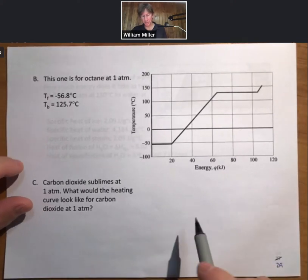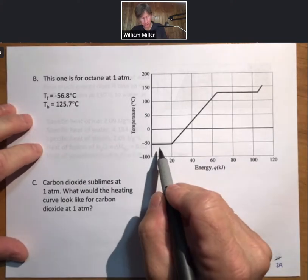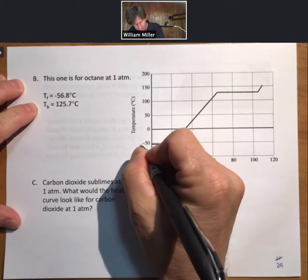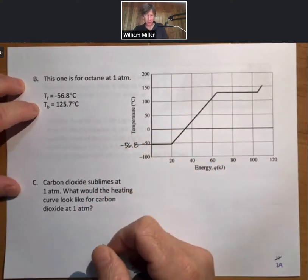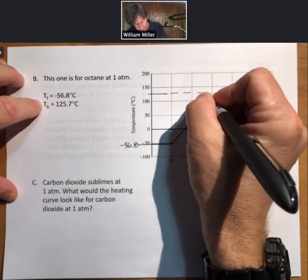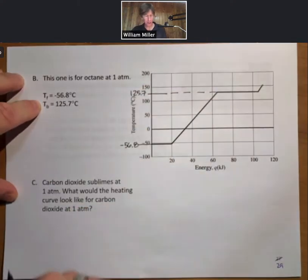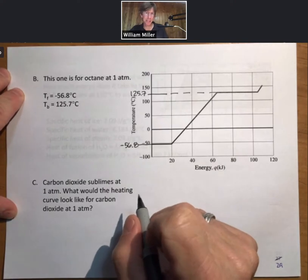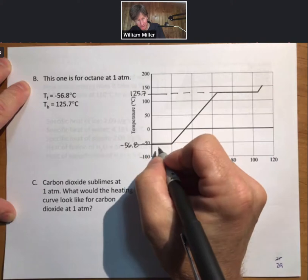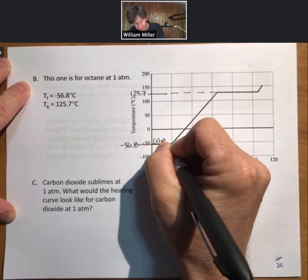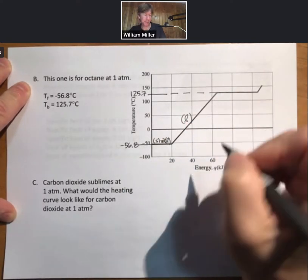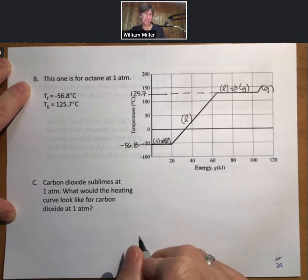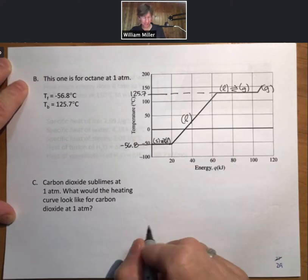This is a heating curve for octane at one atmosphere. It has only four regions. And I'll note that we have the freezing point of minus 56.8 and we have the boiling point of 125.7 on here. And so because we know these are the two phase changes, we must be missing the one that's down here. But we can fill it in. So this is going to be solid to liquid. We're going to have a temperature increase for the liquid phase, liquid to gas, and then up here at the end, we have just gas. So this is a heating curve for octane.